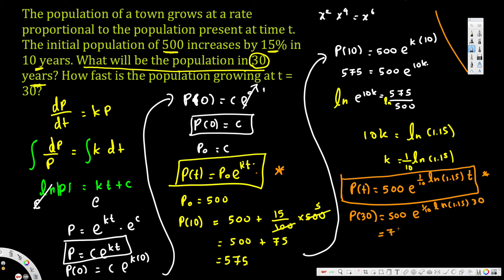Calculating that, we get approximately 760.44, so the population in 30 years is approximately 760 people. The next part asks how fast the population is growing at t = 30, which is a rate — so we need dP/dt.